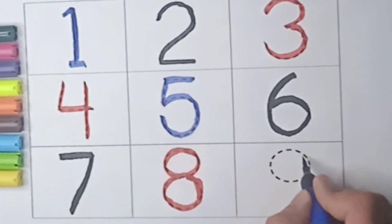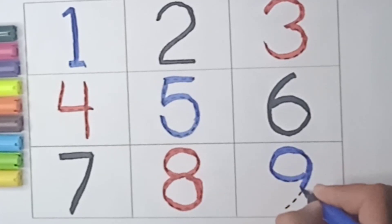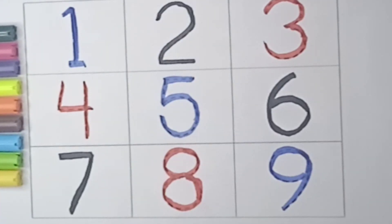Blue color. Make a circle and small slanting lines. 9. Say 9. It's counting time. Let's start.